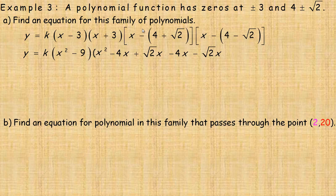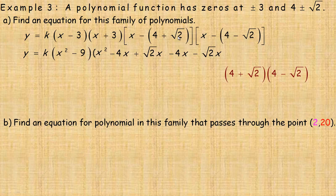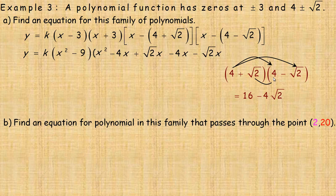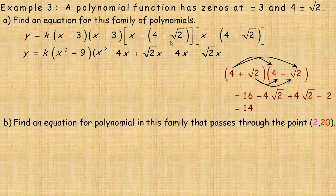Then we multiply the constant parts together. Notice we have a negative times a negative, so we can drop both negatives: it becomes (4 plus root 2)(4 minus root 2). Expanding: 4 times 4 is 16; 4 times negative root 2 is minus 4 root 2; root 2 times 4 is plus 4 root 2 — those cancel to zero; and root 2 times negative root 2 gives negative 2. So 16 minus 2 equals 14, and that whole product simplifies to positive 14.